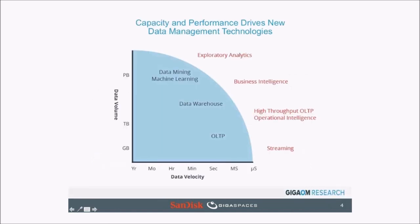If you take a step back and look at the data management space today, we can see a series of technologies driven by two main factors: the volume of the data and the velocity of the data — meaning how fast data is entered into the system and how fast it needs to be processed. As we go from the top-left corner to the bottom-right corner, we're reducing data volume while increasing data velocity. Talking about petabytes of data in exploratory analytics — tools like Hadoop that store massive amounts and perform offline analysis.